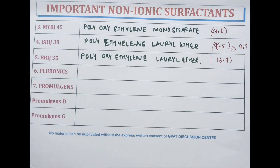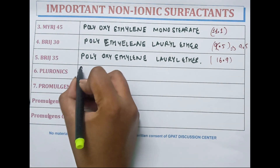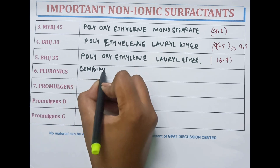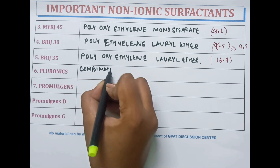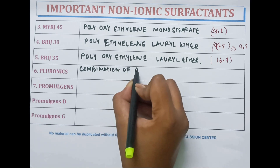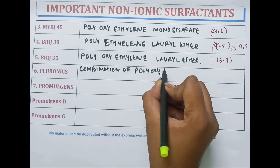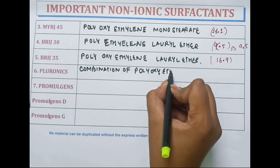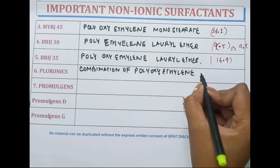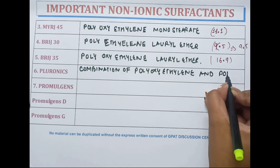Poloxamers have the combination of polyoxyethylene and polypropylene.